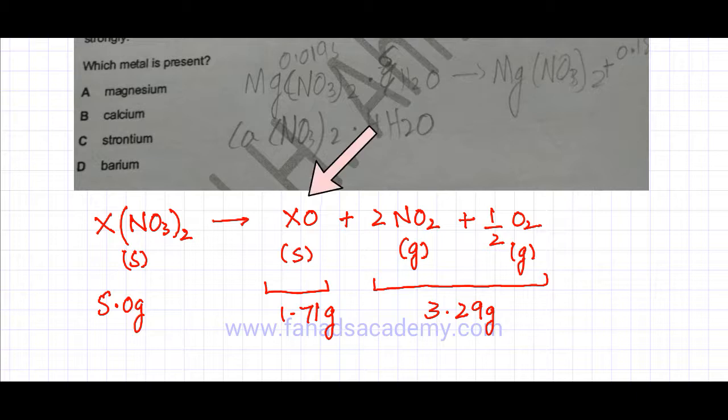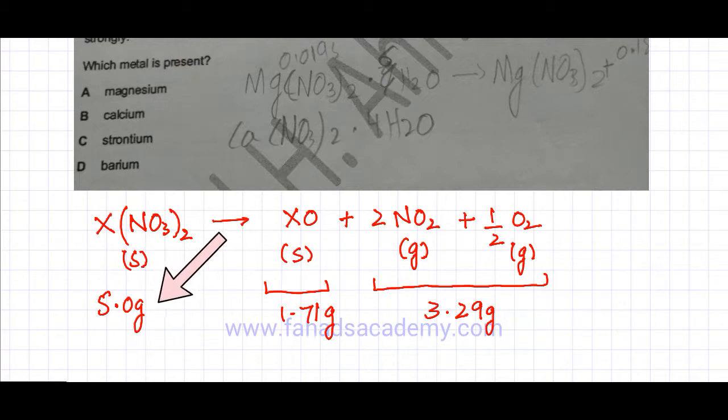I need to figure out what X is. There are two ways of solving this question. You can either take magnesium, calcium, strontium, barium and put them one by one and see which equation works. You can substitute X with each of the four metals and figure out which reaction these masses are true for.